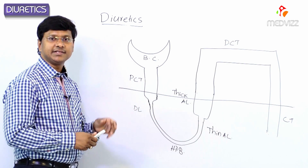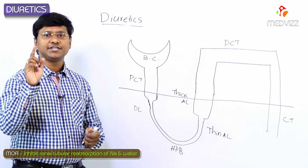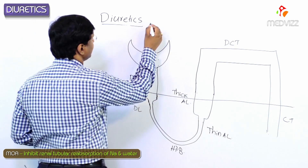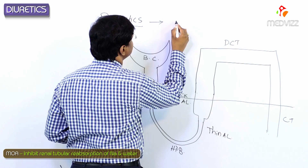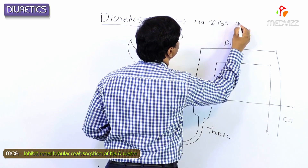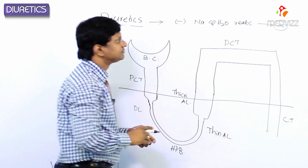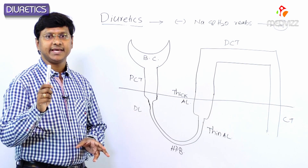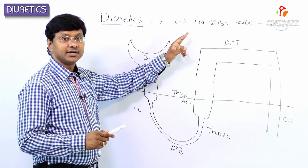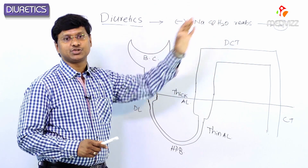Now, consider these particular diuretics. Diuretics mainly exert their effect by inhibition of renal tubular reabsorption of sodium and water. They exert their action by inhibiting sodium and water reabsorption from the various parts of the nephron at different levels.